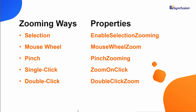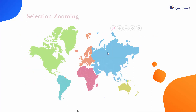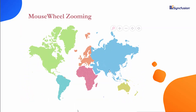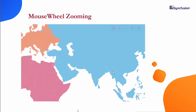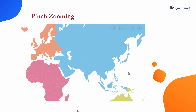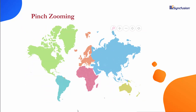I will explain the five different zooming modes of Blazor maps. In the first option, selection zooming, you select the map area to be zoomed. In the second option, mouse wheel zooming, you scroll the map area using the mouse wheel. In the third option, pinch zooming, you pinch to zoom in and separate your fingers on the map area to zoom out on touch-enabled devices.